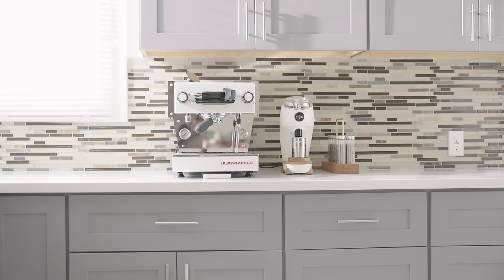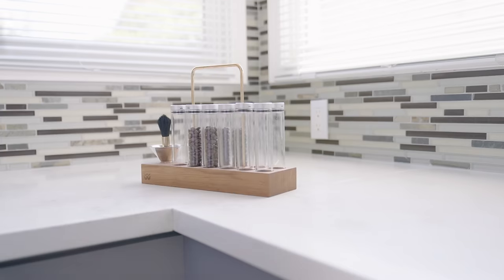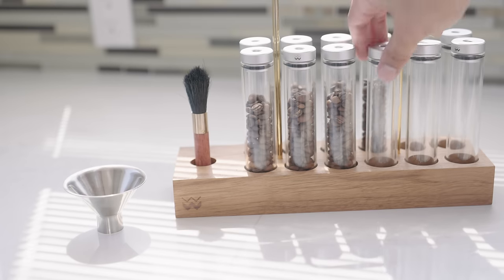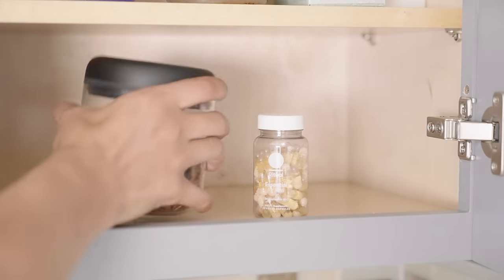We'll start with the dosing cellar. I used to dose my beans right before brewing, but this thing has been a welcome luxury. Pre-dosing beans makes the morning routine flow a thing of beauty. The 12 vials are enough to store a majority of a 12-ounce coffee bag and any leftover beans are kept in this Fellow Atmos vacuum canister.